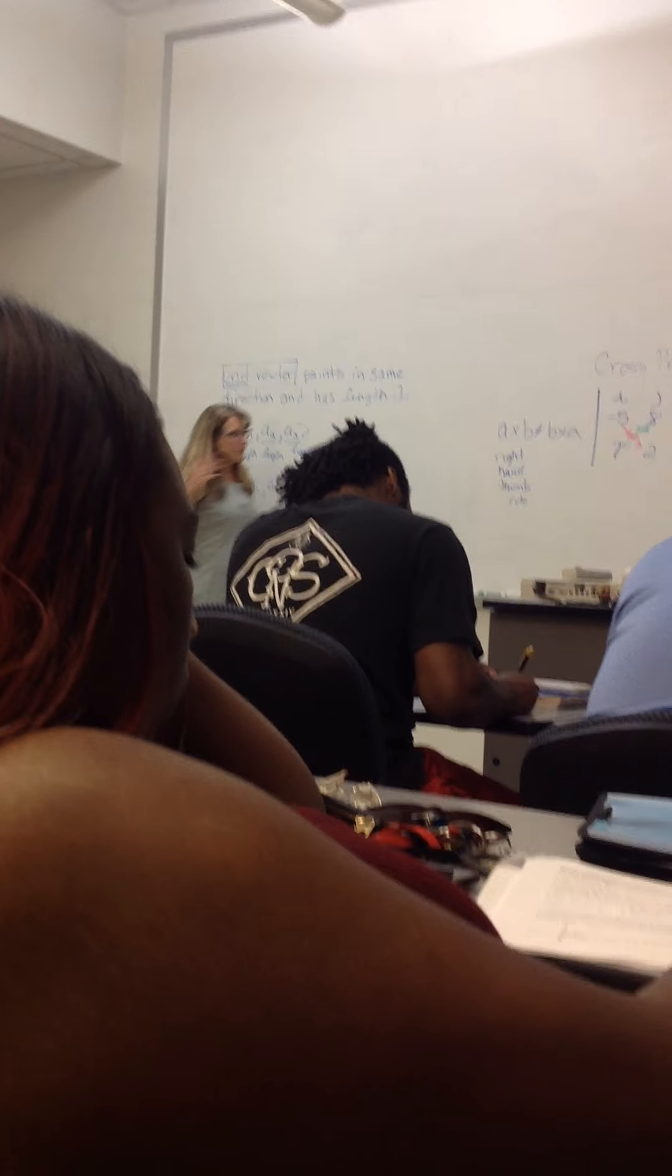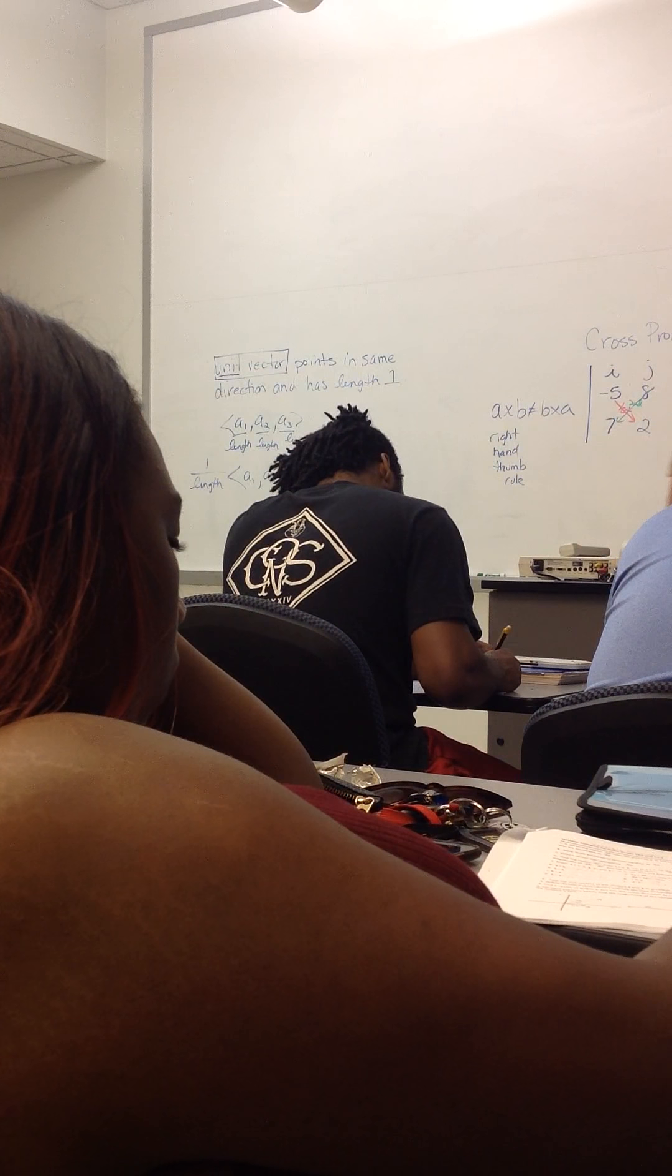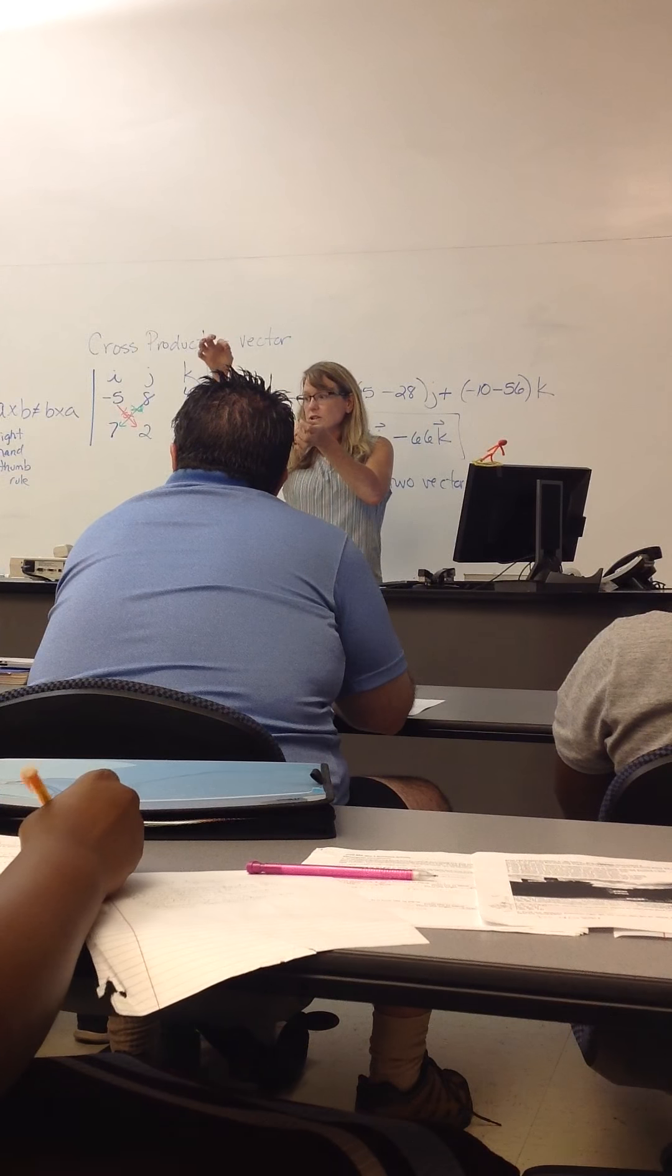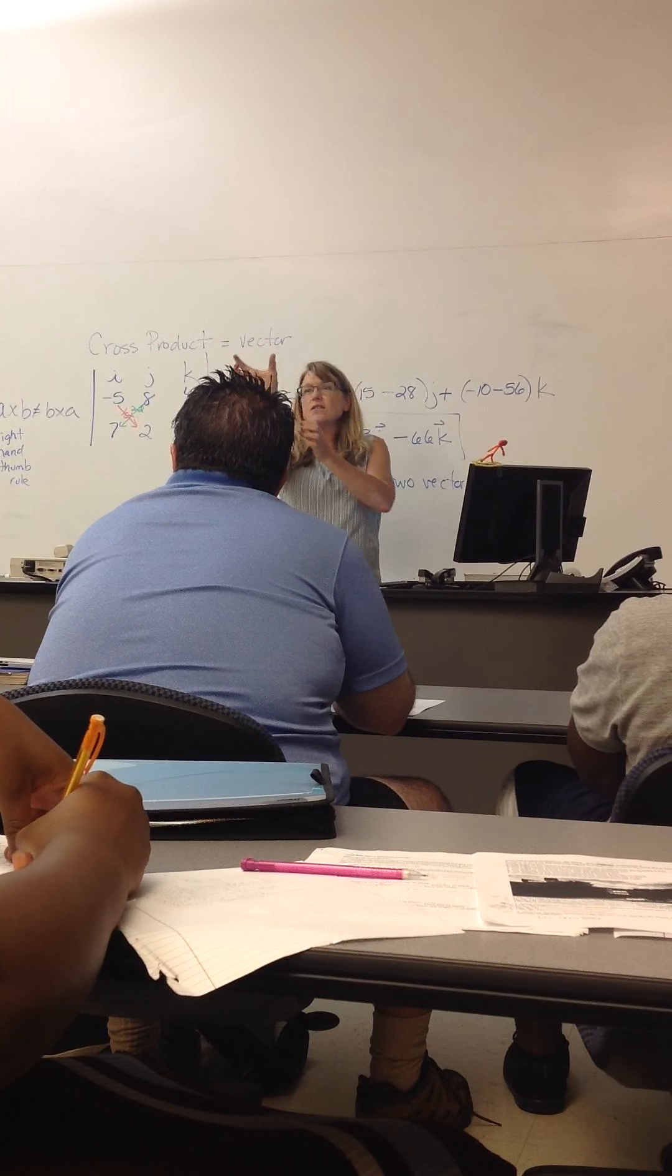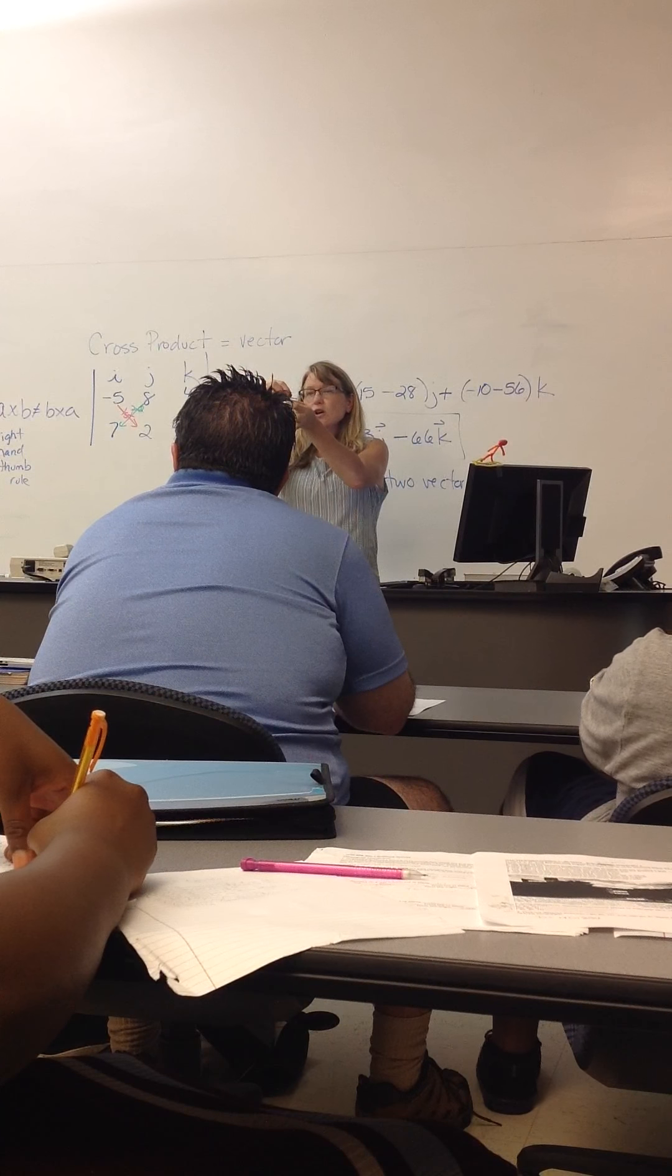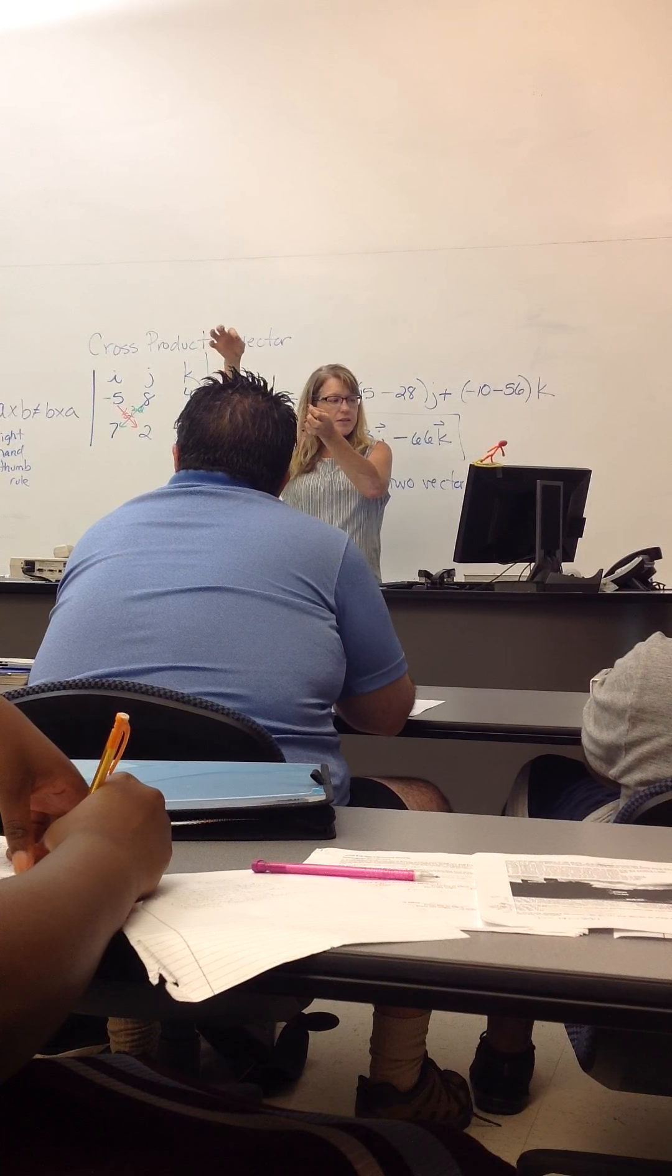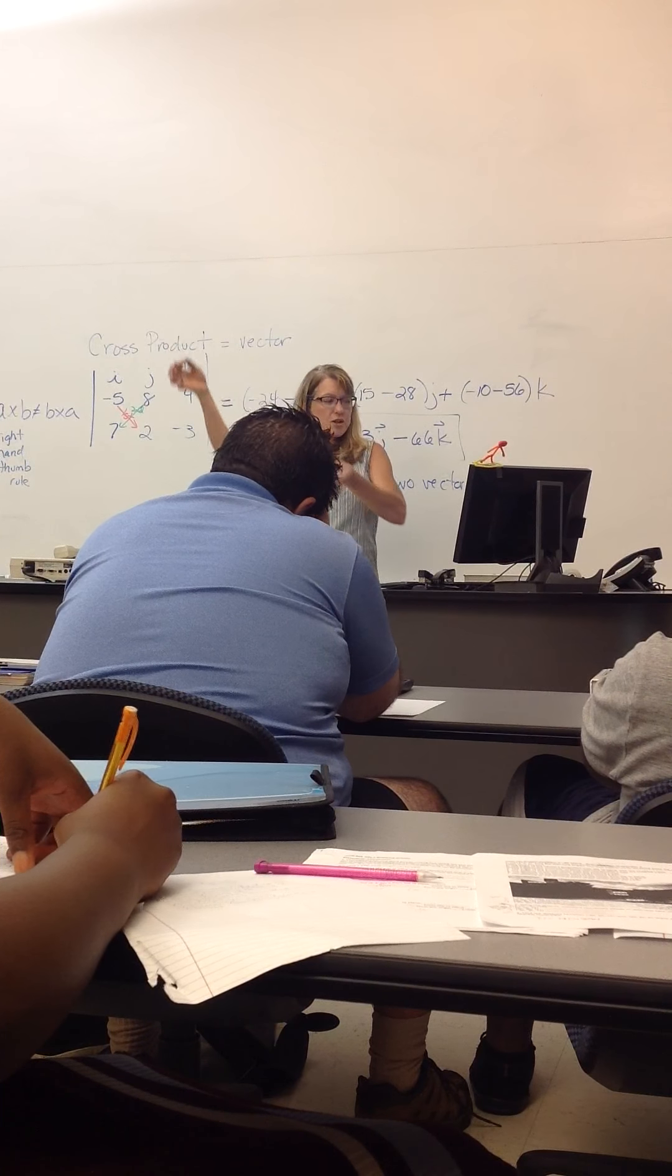To find the length of a vector, it's the same thing as finding the distance of a point from the origin. If you're just given a vector, you're assuming it starts at the origin and goes to that point, so its length is the distance from the origin to that point.